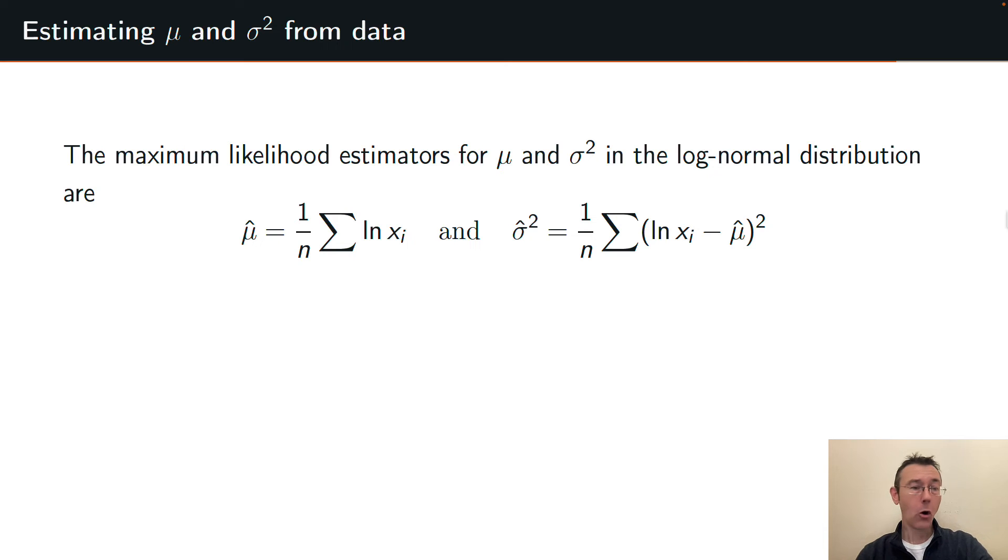As you would hope, you can estimate your parameters of a log-normal distribution from data. I won't do any of the theory here, but I will give you the formulas for the maximum likelihood estimators, the MLEs, for μ and σ² in the log-normal distribution. And they're kind of what you would expect. For instance, μ̂ is just 1 over n times the sum of all the logs of the xᵢ's, so basically the average of the logs of the xᵢ's. And this is I think very intuitive when you think about the log of X having a normal distribution.